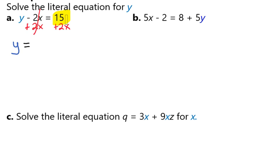Now 15 does not have an x, but the 2x does. So we know that those cannot go together. The best they can do is sit side by side. So we had a positive 2x and a positive 15. Here we see that the y is by itself, and we're done.